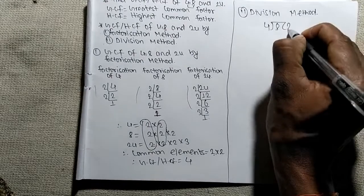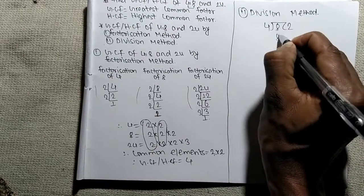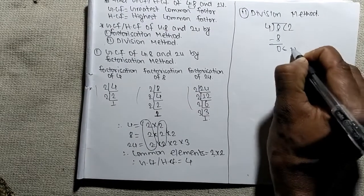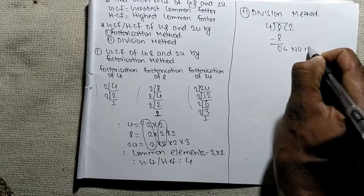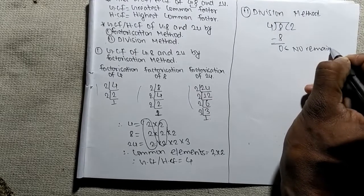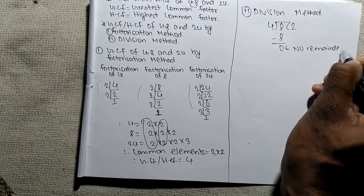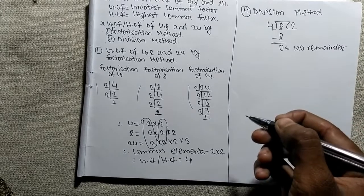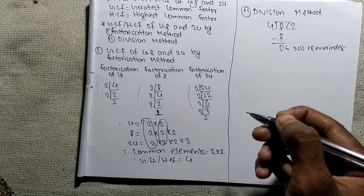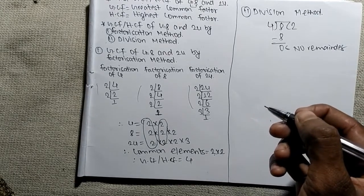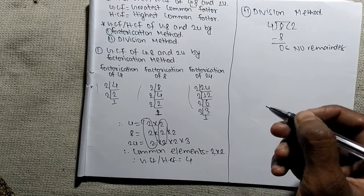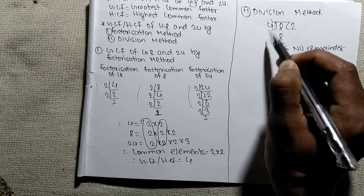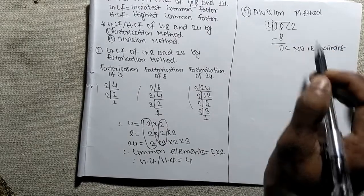4 times 2 means 8, so the remainder is 0. There is no remainder at last. While finding GCF or HCF by division method, the divisor that leaves no remainder becomes the GCF or HCF. In this case, 4 leaves no remainder.